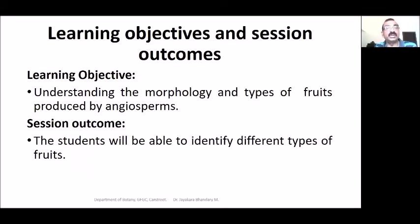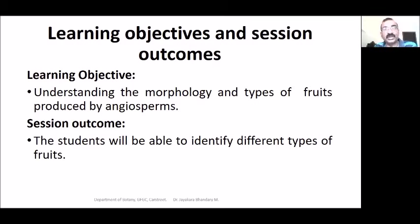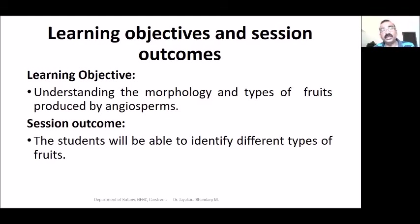Now, what is the purpose? The objective, the outcome should be: you should be able to identify the different types of fruits. Usually we think of the taste when we think of fruits. Next time, you should try to understand what type of fruit it is. That should be the skill you develop — understanding the morphology and the types of fruits produced by angiosperms.